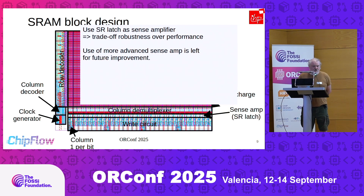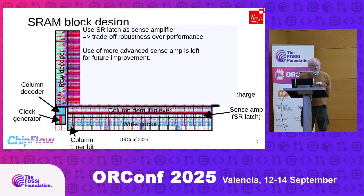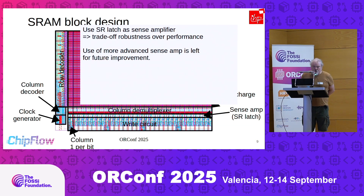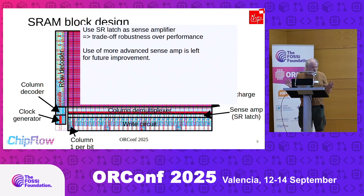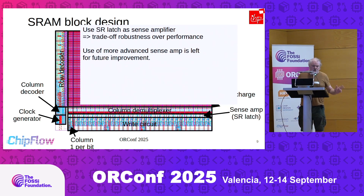If you talk to any analog designer, he will say this is slow, because you need a very large difference between the two bit lines. He could make a design that needs much less difference and is much faster. But then it probably has more requirements on turning it off and on internal timing. I preferred here to do the first design robustness-over-performance, and the speed improvement can be done later. That's also generally true for the row decoder and column decoder design: get it working, then improve later.